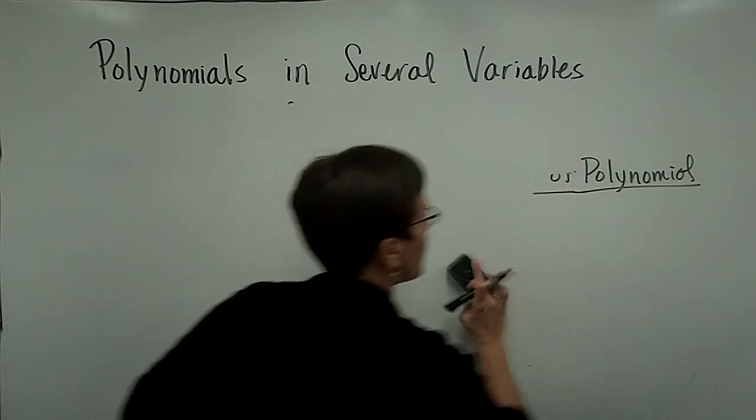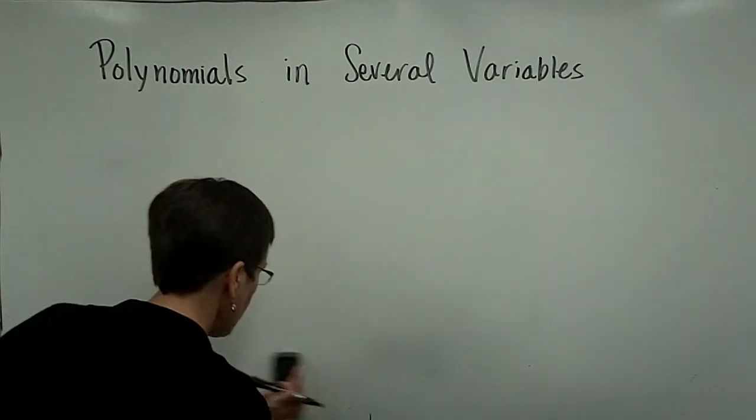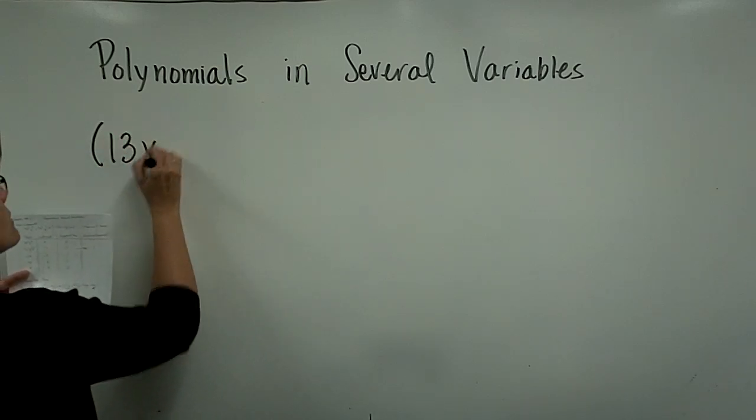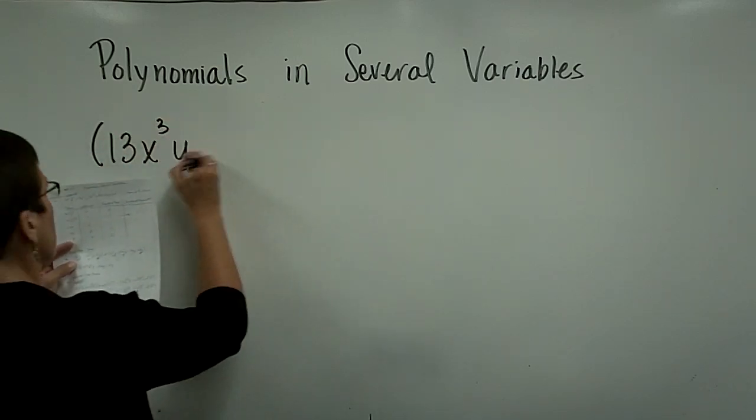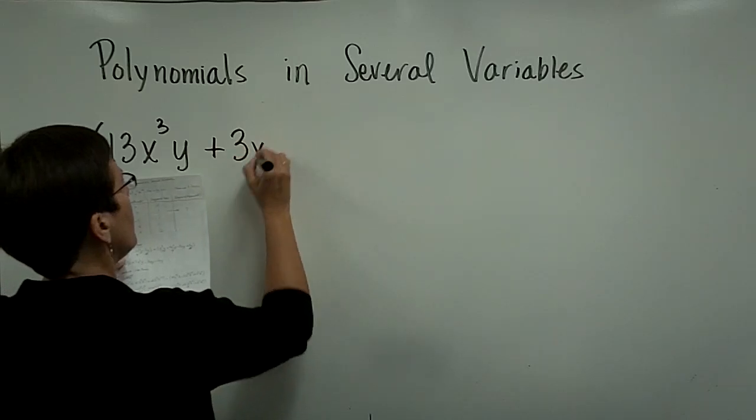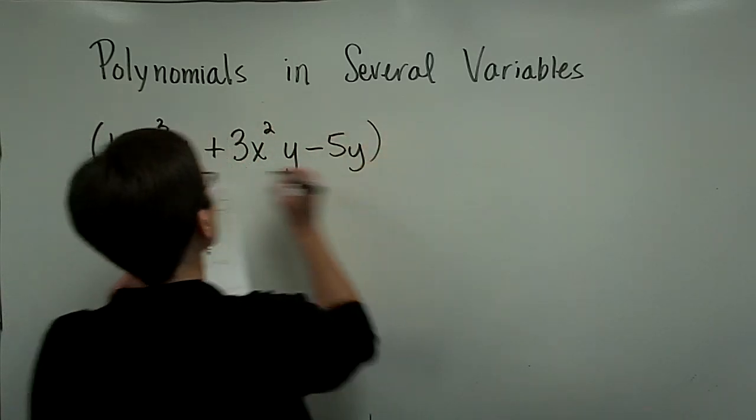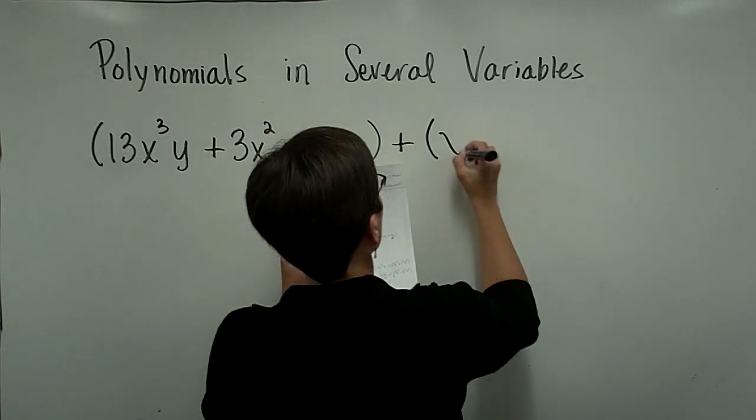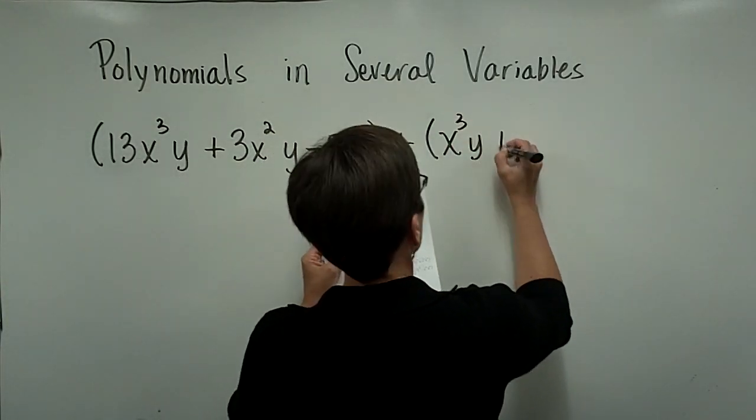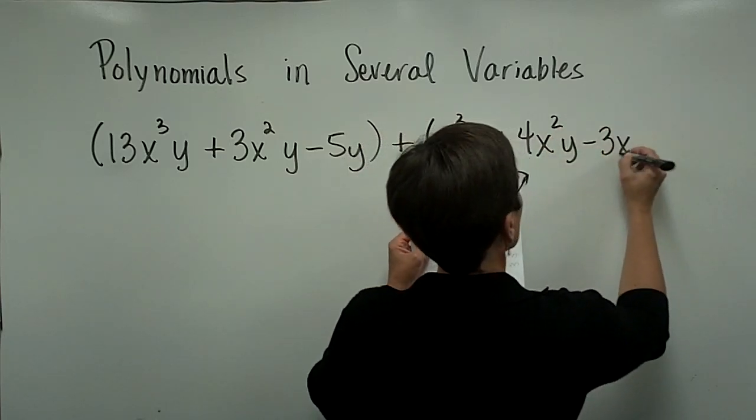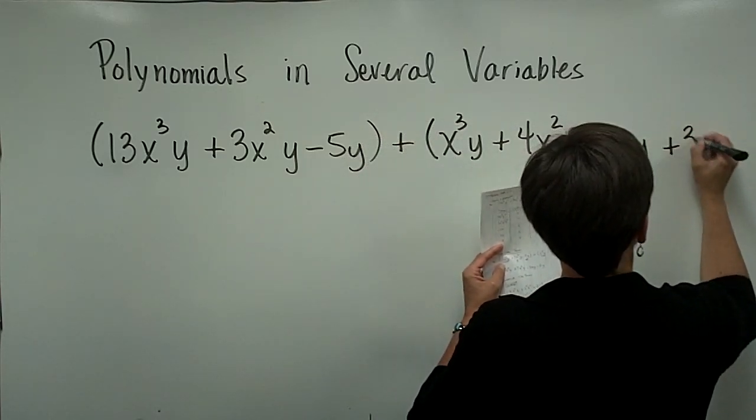A little bit hard to get them written up here quickly, because there's so many letters. Let's take 13x³y + 3x²y - 5y and add to that x³y + 4x²y - 3xy + 3y.